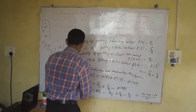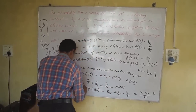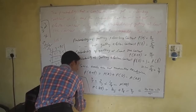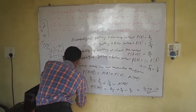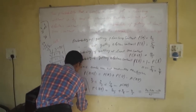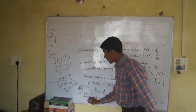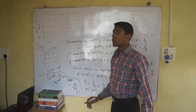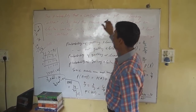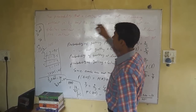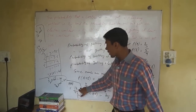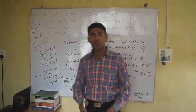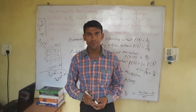The answer is P(A∩B) = 14/45. The probability of getting both the plumbing contract and the electric contract is 14/45. Thank you very much.